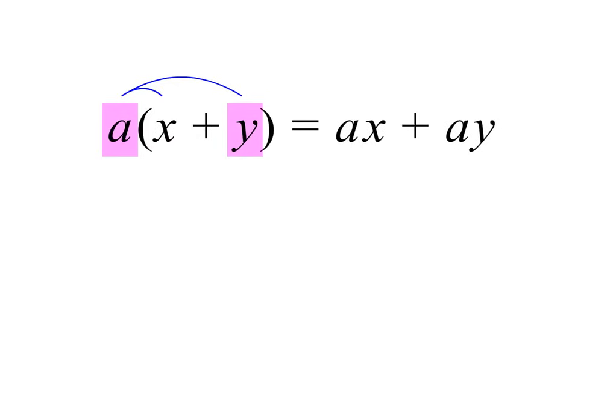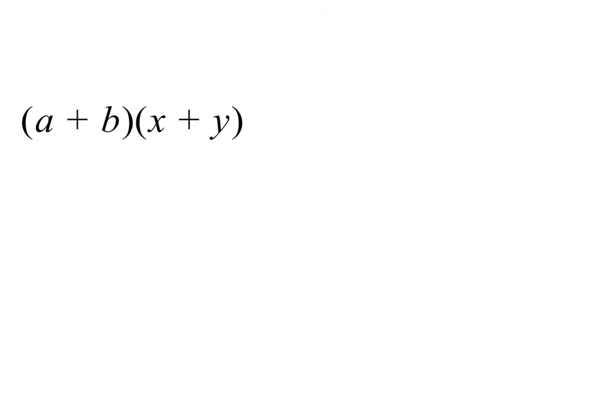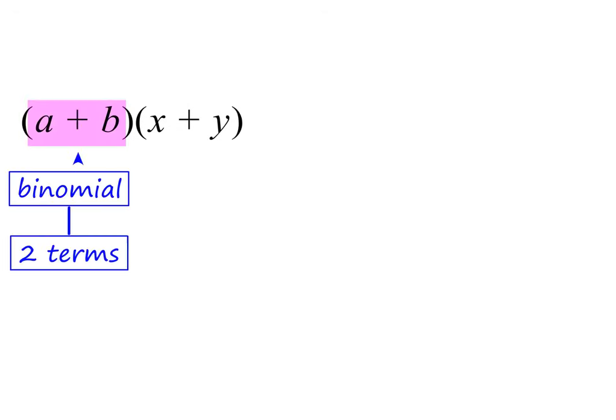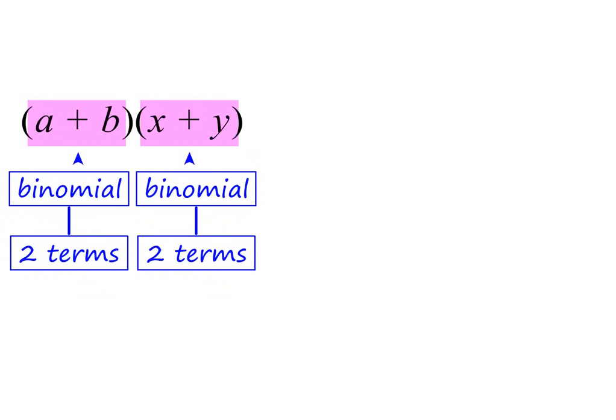Please pause to check my working. In grade 9, you also need to simplify the following type of expression — a binomial, or two terms, multiplied by another binomial. Let's go on to see how to do this.